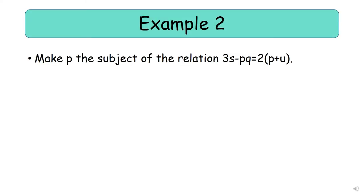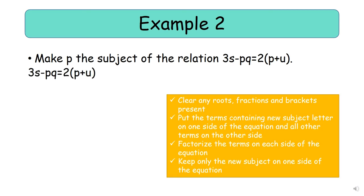Let's look at another example. Make p the subject of the relation 3s − pq = 2(p + u). This equation has a bracket, so we start by clearing our bracket. We multiply 2 by (p + u), so 3s − pq = 2(p + u) becomes 3s − pq = 2p + 2u. Next we group the terms containing the letter we are looking for — we want to make p the subject, so we group pq and 2p on one side.